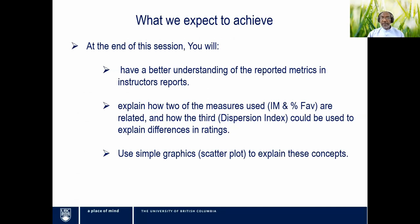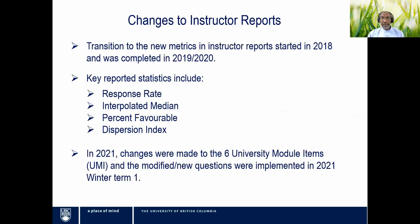By the end of this session, participants will have a better understanding of the reported metrics in the Instructor Report, and be able to explain how two of those statistics — interpolated median and percent favorable — can be used along with a measure of dispersion, the dispersion index, to interrogate the data in a more meaningful and fairer way. Participants will also be able to use graphics such as scatter plots to explain the concepts behind the new metrics.